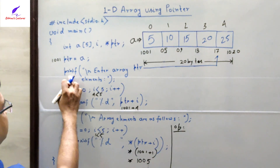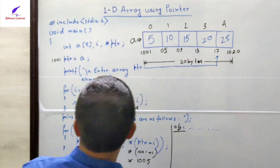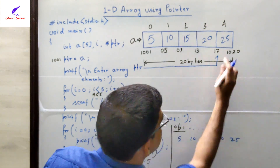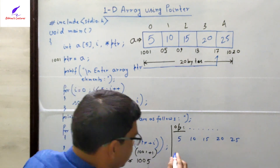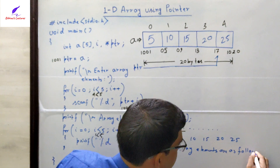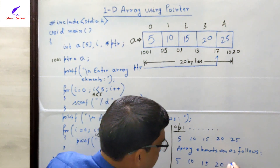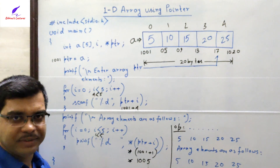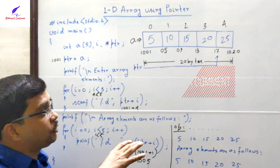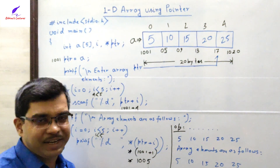When the program runs, it first prints 'Enter array elements'. The user inputs 5, 10, 15, 20, 25. Then it prints 'Array elements are as follows: 5 10 15 20 25'. I hope you have understood the concept of pointers and how to use a pointer to work with a 1D array — how to take values and how to print them. Thanks for watching, please take care, have a nice day!